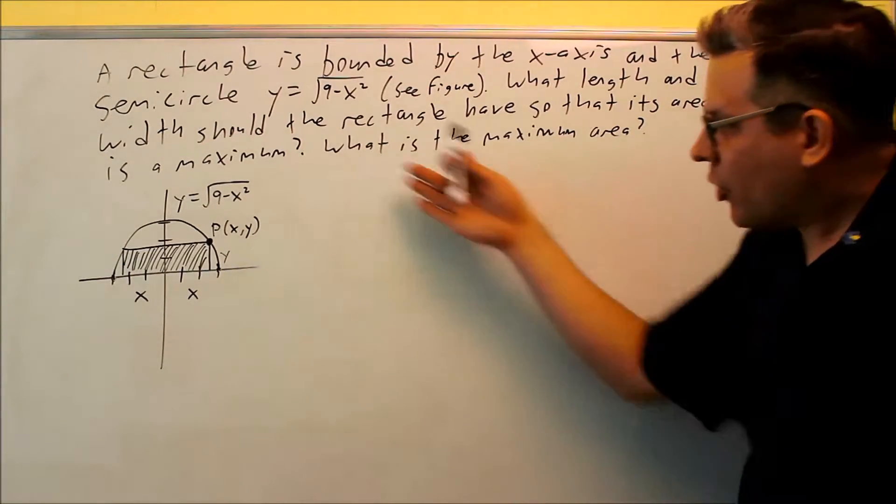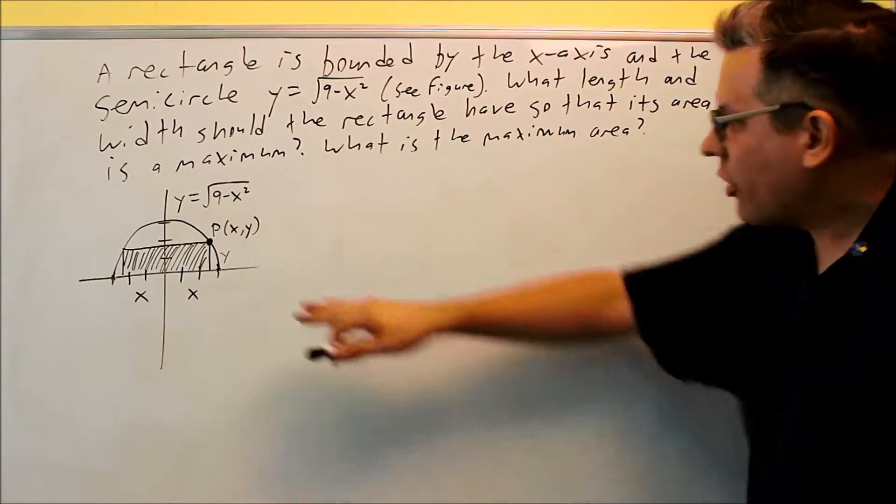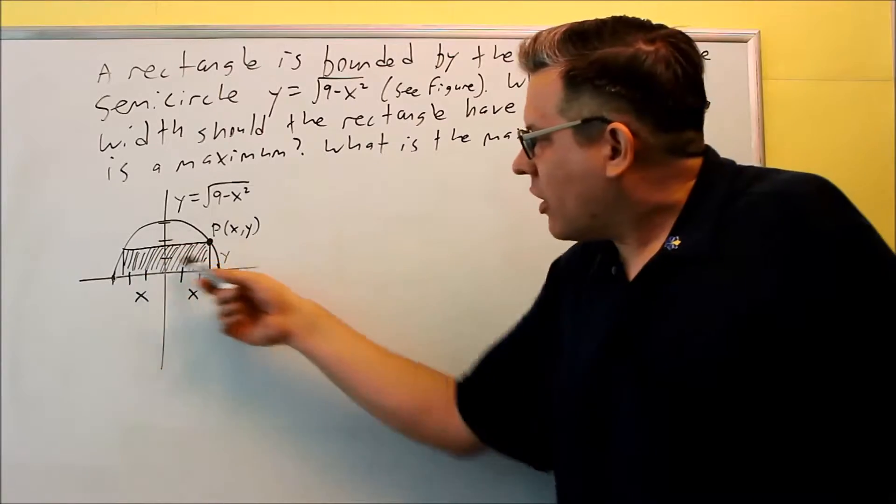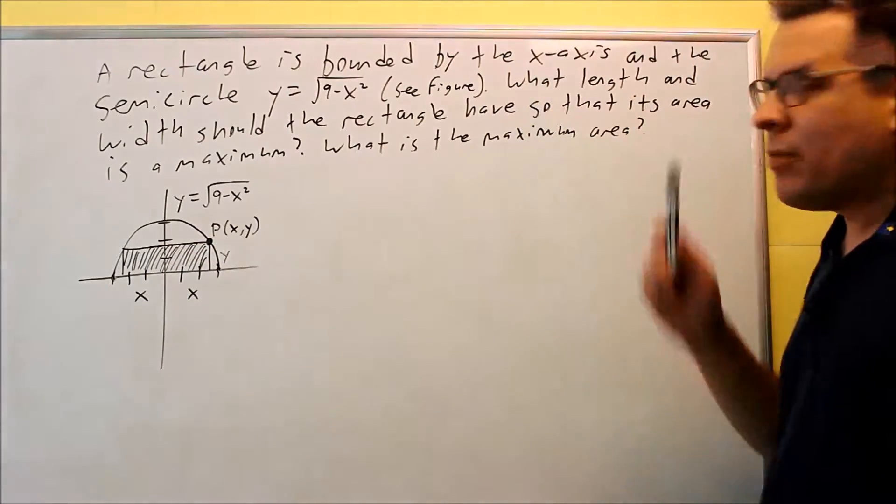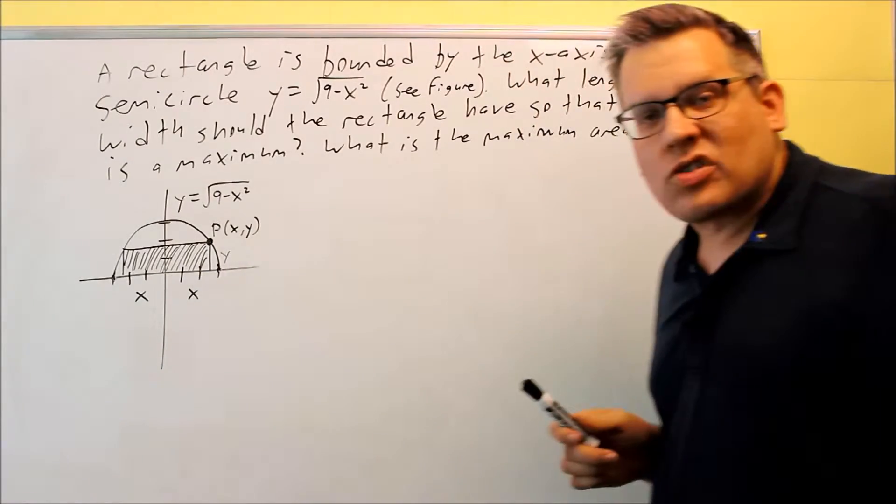For this problem they give us a graph that we're going to use to answer this question. So let's go ahead and read through this and we'll look at the graph at the same time. It says a rectangle, so we see that in here, the shaded rectangle is bounded by the x-axis.